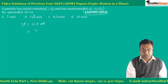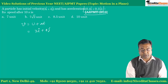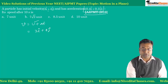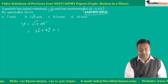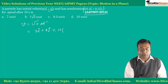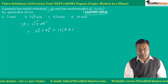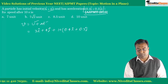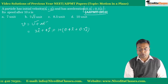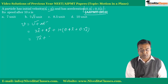Pahle use put kar djetay hai. U is 3i plus 4j. Plus time kitna diya hai? 10. Into acceleration 0.4i plus 0.3j. I ko I me add karayin, J ko J me. To we will get 7i plus 7j.